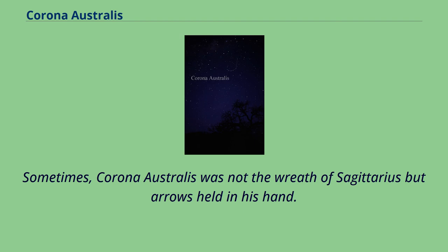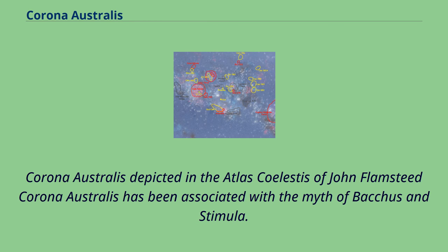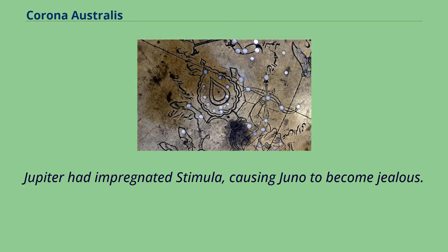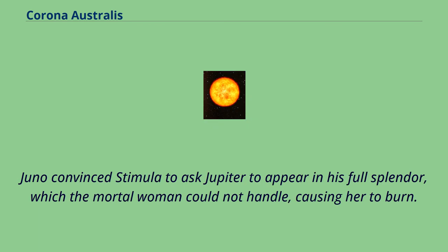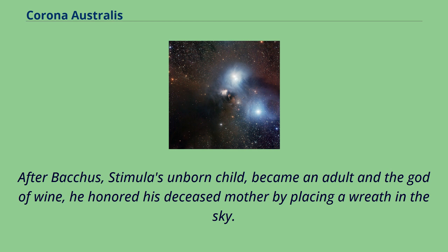Corona Australis has been associated with the myth of Bacchus and Stimula. Jupiter had impregnated Stimula, causing Juno to become jealous. Juno convinced Stimula to ask Jupiter to appear in his full splendor, which the mortal woman could not handle, causing her to burn. After Bacchus, Stimula's unborn child, became an adult and the god of wine, he honored his deceased mother by placing a wreath in the sky.